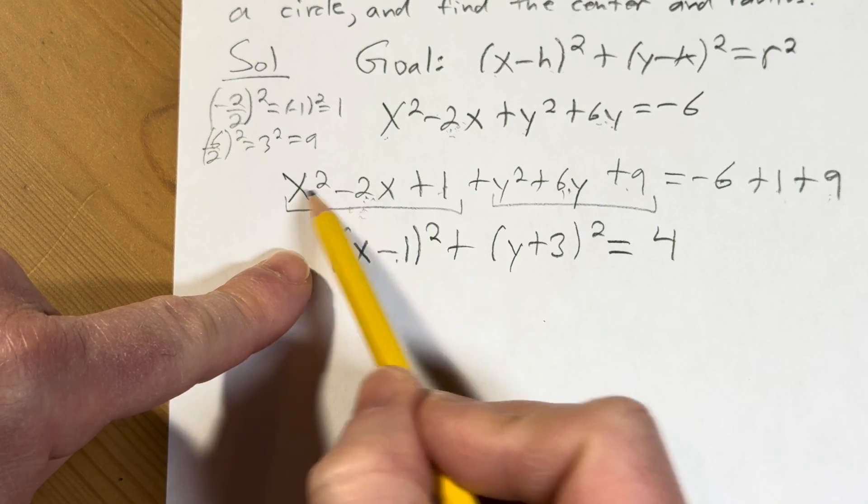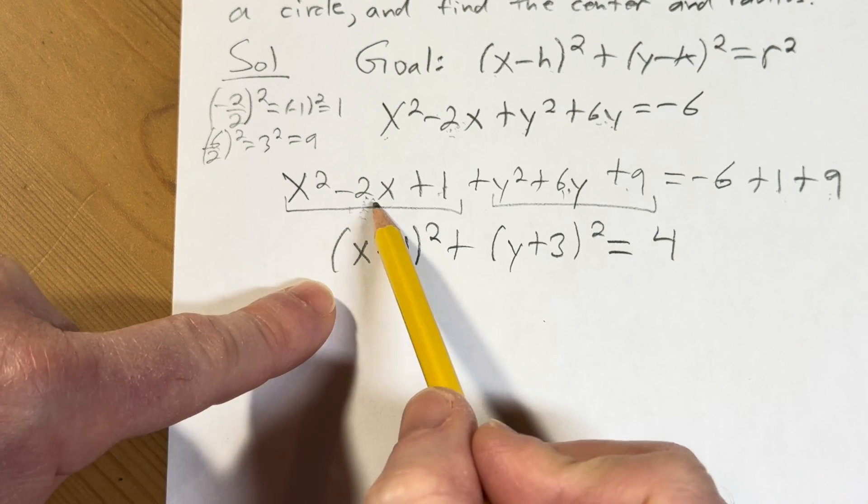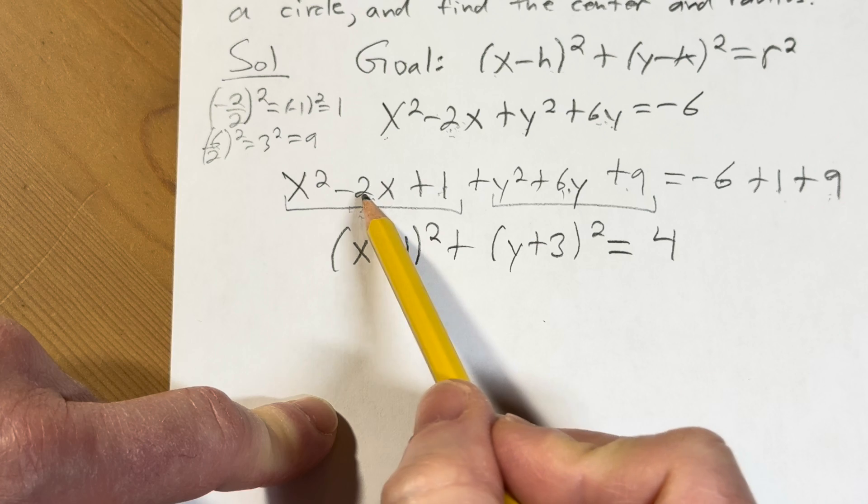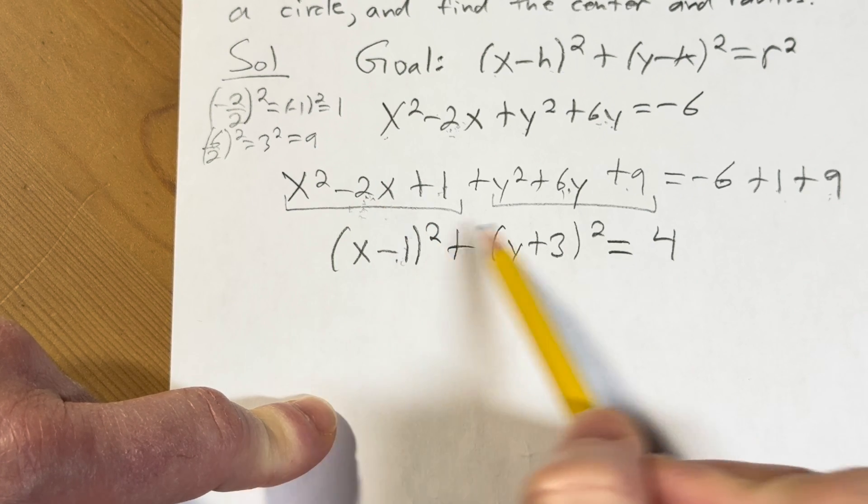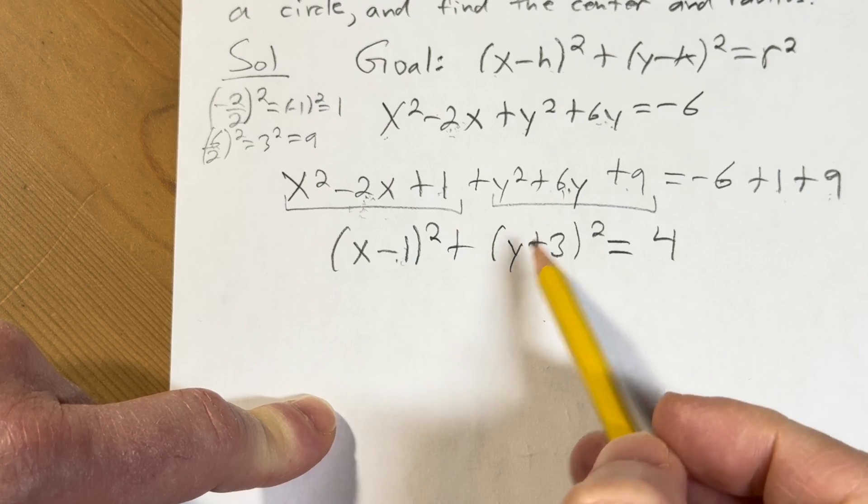Once you get here, this is called a perfect square trinomial because it's a perfect square, means you can write it like this. So to do that, the trick is you just divide this number by 2 and keep the sign. So 2 over 2 is 1, you keep the sign. 6 over 2 is 3, you keep the sign. And then here you are and you're good because that's the equation of a circle, right?